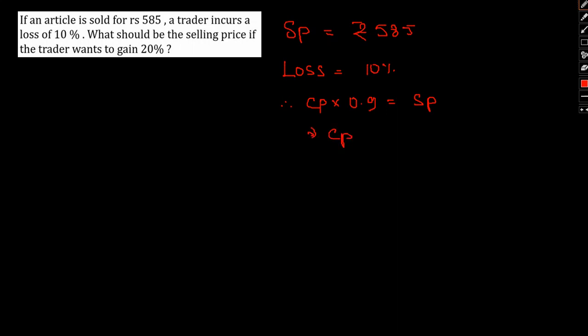Therefore, CP will be SP divided by 0.9, or 585 by 9 into 10. So CP in this case will be 650, rupees 650.